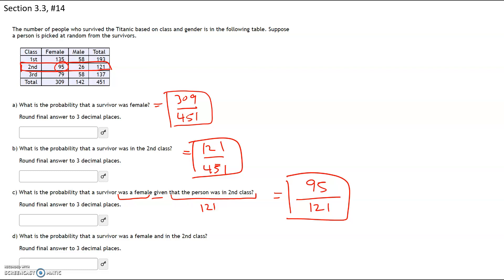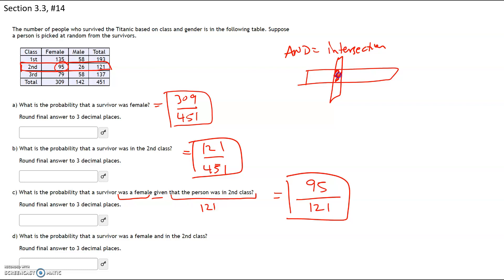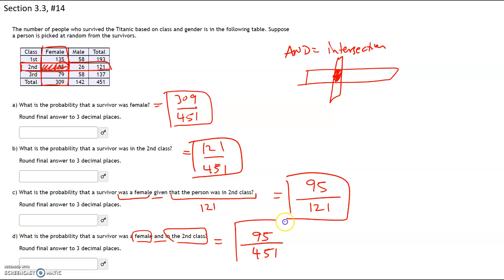Part D: what is the probability that a survivor was female and in the second class? Anytime you have the word 'and,' this represents an intersection — where they meet. So we're looking for the intersection of female and second class, which happens to be 95. Because we have no given, the denominator is going to be all 451 survivors, and of those, 95 were in the second class and female. Note: round to three decimal places, so make sure you convert all of these fractions.